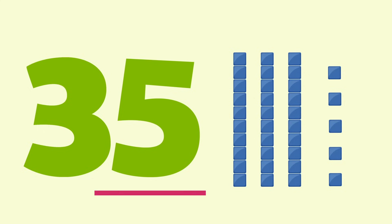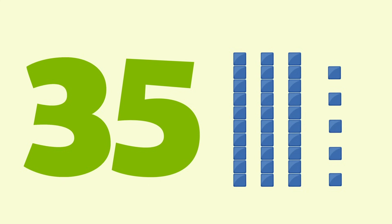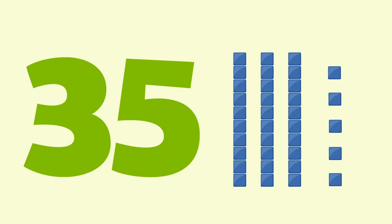The ones place is furthest to the right. The number in the ones place always equals itself. In our number 35, the five is in the ones place. Its value is just that — five. It is represented by the five ones cubes.